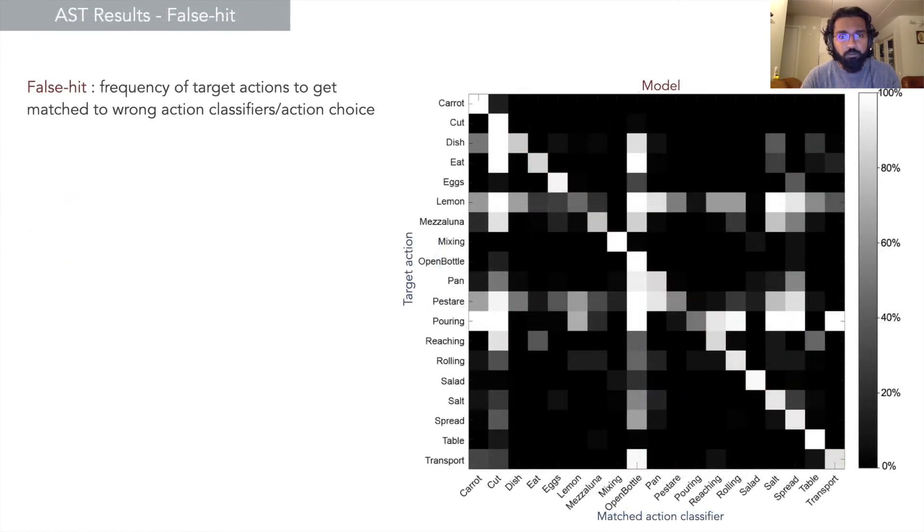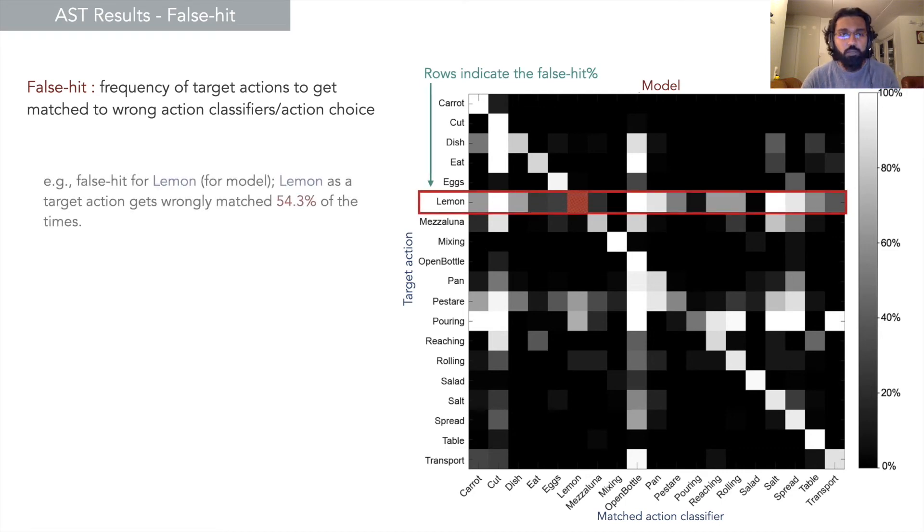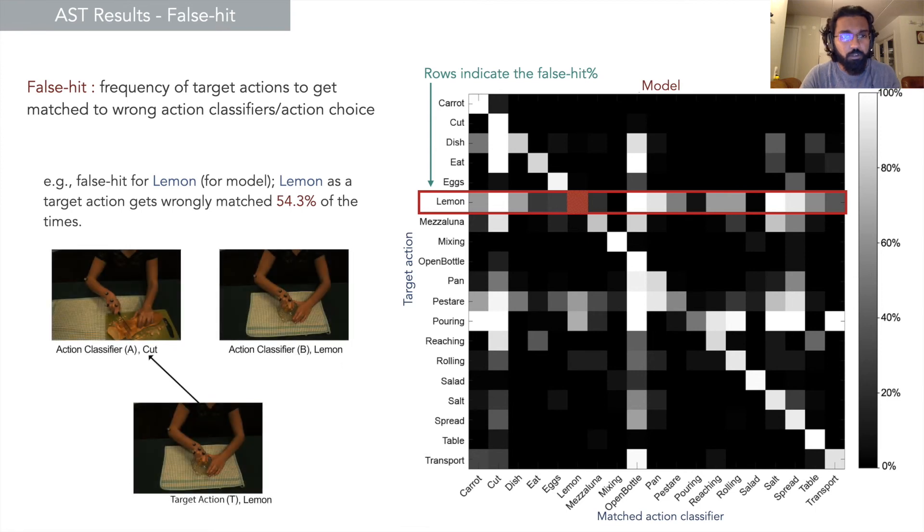The third measure we look into is false hit—the frequency of the target action to get matched wrongly, which is indicated by the rows. Here in this example, we take lemon, and lemon as a target action gets matched wrongly 54% of the time.